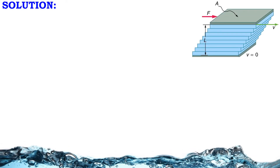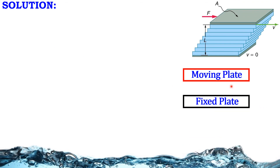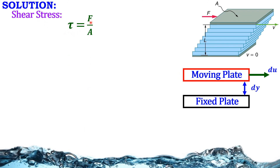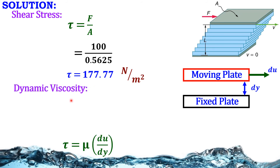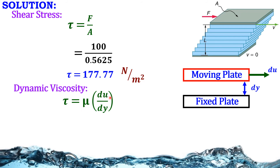Solution. This is our fixed plate and this is our moving plate. The distance between these two plates is dy. The upper plate moves at velocity u. Shear stress tau = force / area = F / A. F is 100 N and A is 0.5625. Therefore tau = 177.77 N/m².